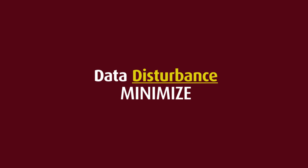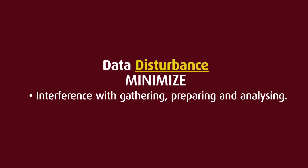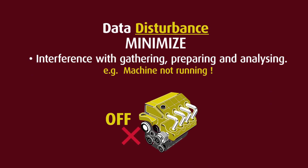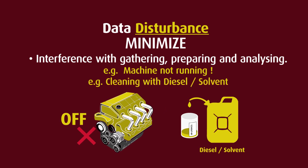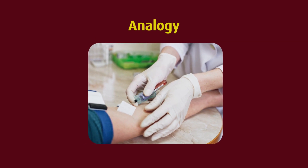Minimizing data disturbance refers to reducing interference associated with gathering, preparing, and analyzing an oil sample. Taking samples from a machine that is not running, where oil is not hot or well mixed, is a common source of data disturbance. Another example is the cleaning of sampling equipment and bottles with diesel or solvents. We use the analogy that taking an oil sample from a machine is like a doctor taking a blood sample from a person — cleanliness is key.